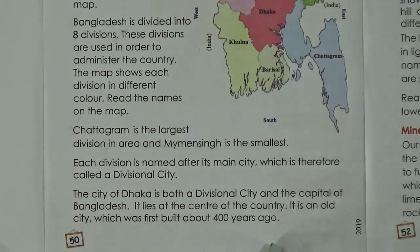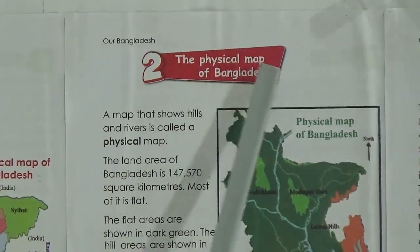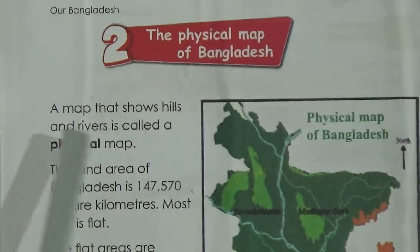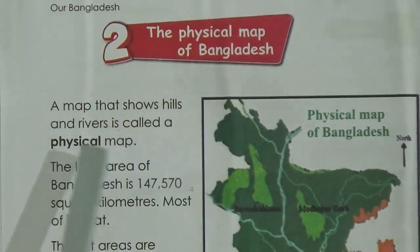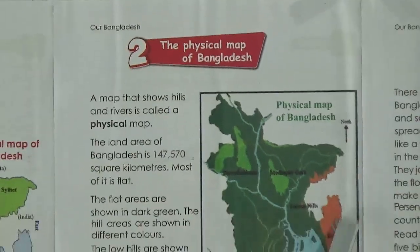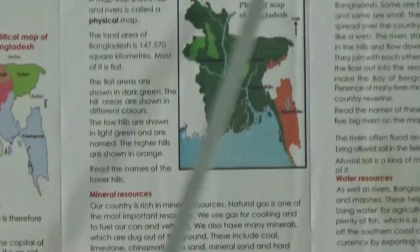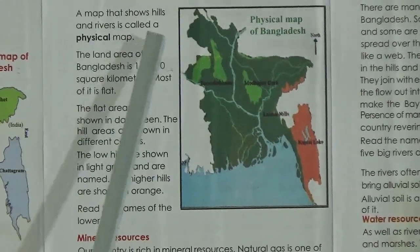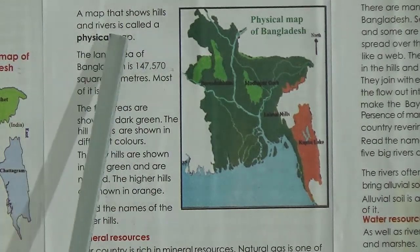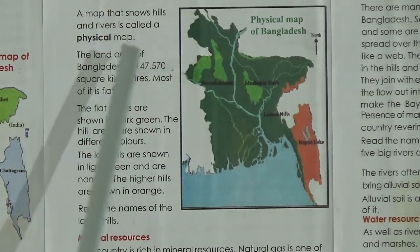Now we will learn about Lesson 2: the physical map of Bangladesh. A map that shows hills and rivers is called a physical map. Students, you can see the physical map — a map that shows hills and rivers is called a physical map.